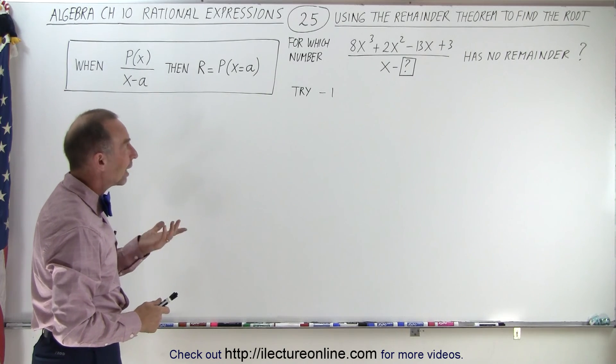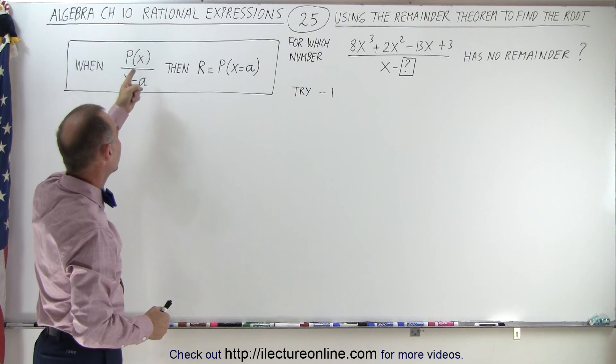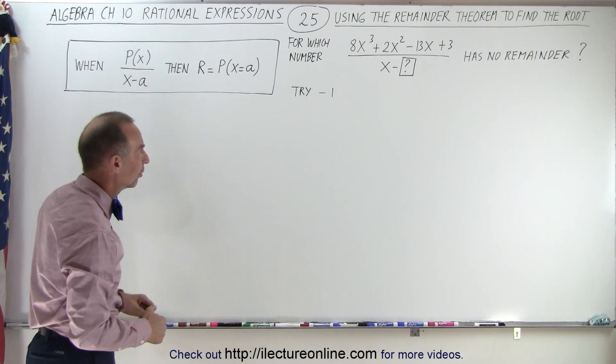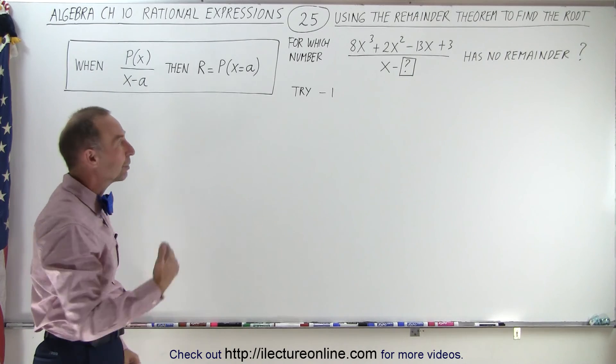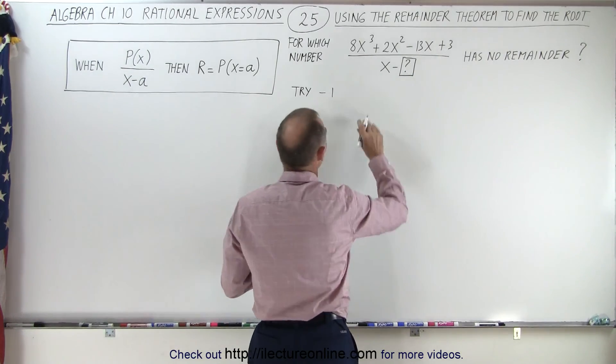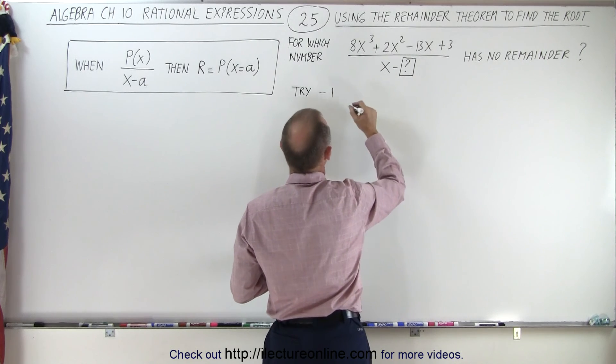So the way to do that is to try different numbers and plug them into the numerator to see if we then end up with a zero as a result. With other words, we're going to evaluate the numerator for various values for x or for the number in here. So let's try that.